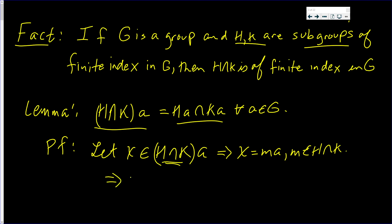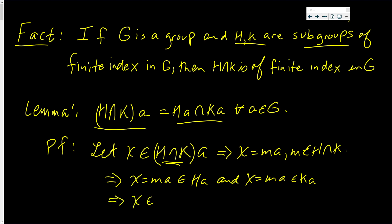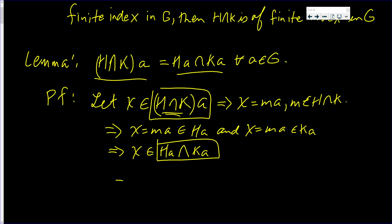This implies that X, which is MA, is in HA, and X, which equals MA, is in KA. Well, if it's in both HA and KA, that means X is an element of HA intersect KA. I started off with X in (H intersect K)A and concluded that X is in HA intersect KA. That means (H intersect K)A is a subset of HA intersect KA.